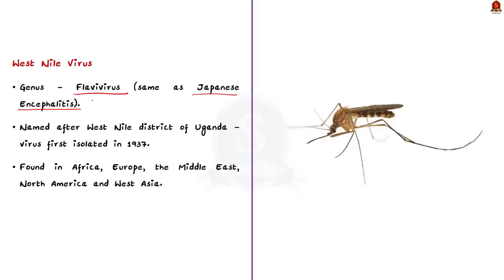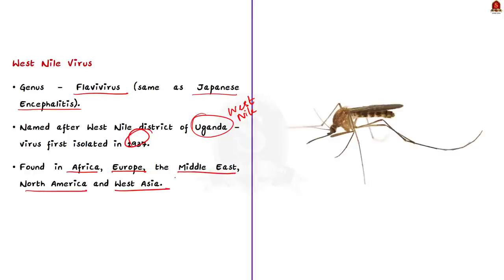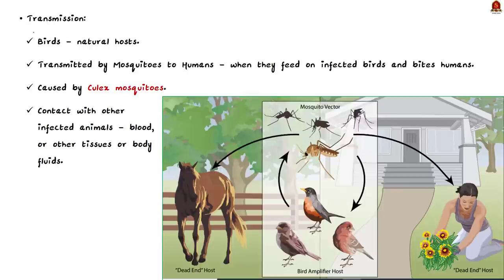Even the Japanese Encephalitis Virus is of the same family. This virus and disease are named after the district of Uganda called West Nile, where the virus was first isolated in 1937. The virus is commonly found in Africa, Europe, Middle East, North America, and West Asia. Birds are the natural hosts or natural carriers.